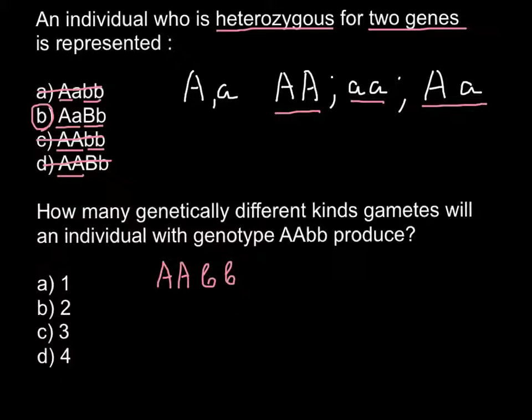We have to cross each of these alleles A with each allele B, and we only keep those genotypes that would be unique. For example, if we use this rule and we add capital A with small b, we would get genotype capital A, small b. And if we add capital A with small b again, we would get the same genotype, capital A, small b.